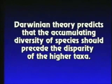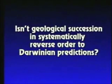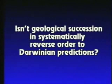Darwinian theory predicts that the accumulating diversity of species should precede the disparity of the higher taxa. Isn't geological succession in systematically reverse order to Darwinian predictions?